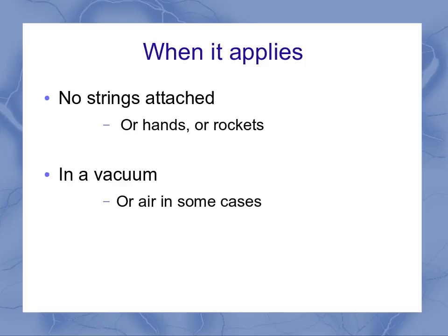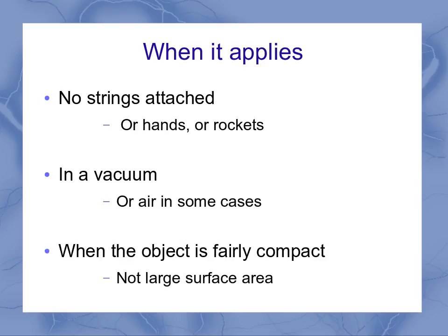Now if you're in a vacuum, you have no resistance. So that's good. Air has very low resistance. So we can assume free fall for air in some cases. Which cases? In particular, when the object is fairly compact, meaning it doesn't have a large surface area. The larger the surface area, the more air resistance you're going to have, and eventually you're not going to be able to neglect it.